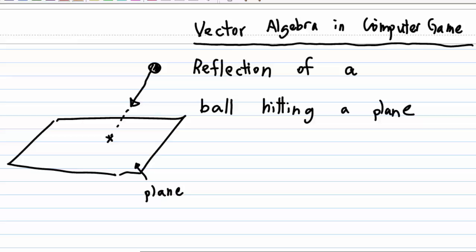First of all, we know that a plane has a normal vector. So let's call this n, the normal vector. And the velocity of this ball is called v.